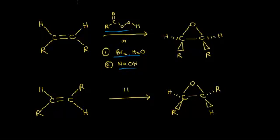If we start with a cis alkene, so our hydrogens are on the same side of the double bond, or you could think about the R groups as being on the same side, for the product, the R groups are still going to be on the same side of where the double bond used to be. If you're looking at a trans alkene, my hydrogens are on opposite sides. You think about the R groups being on opposite sides of the double bond, and in the product, the R groups are still going to be on opposite sides of where the double bond used to be.